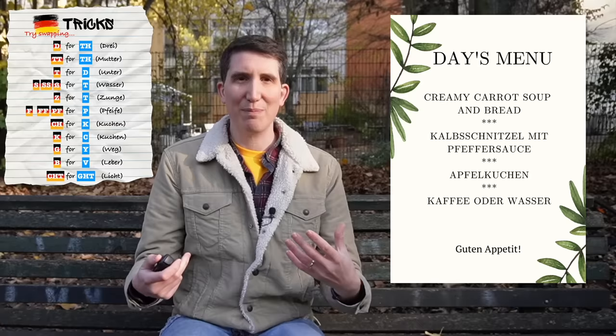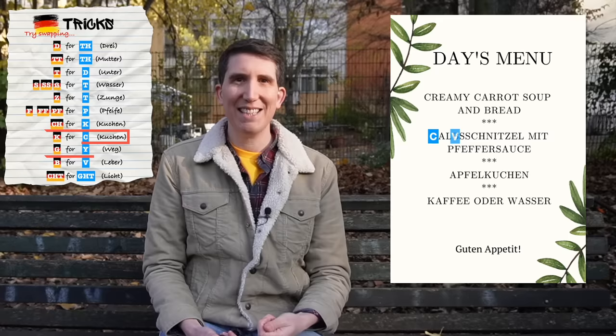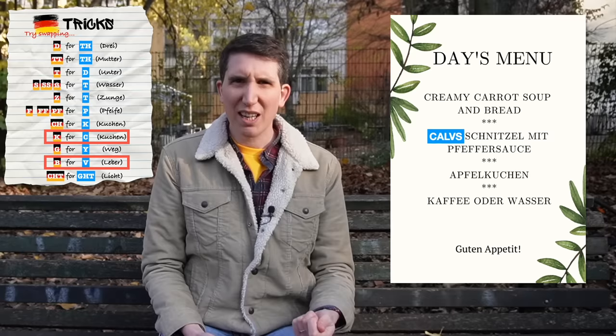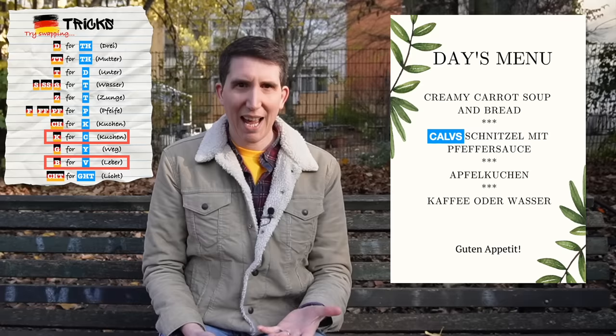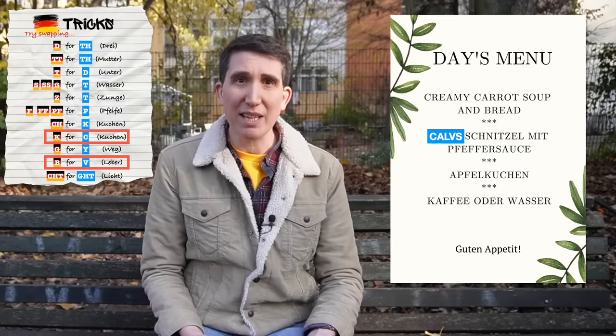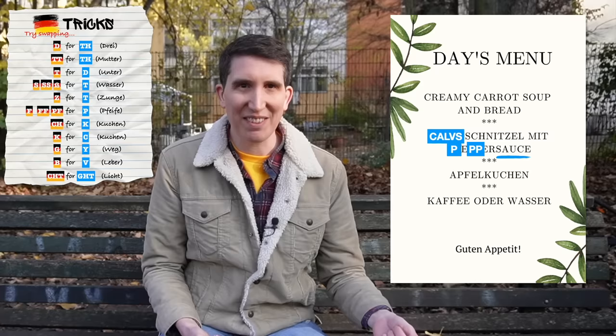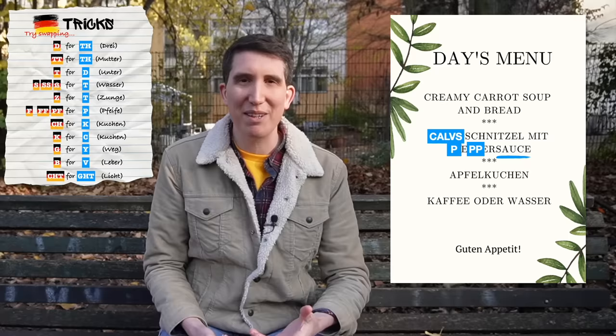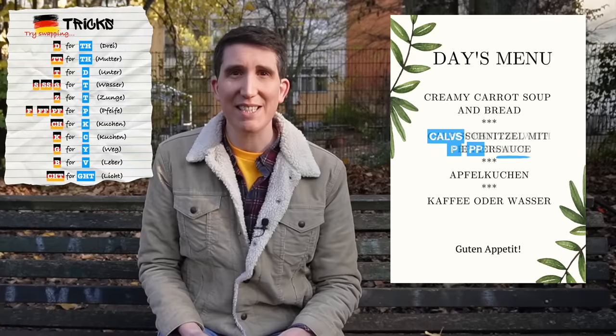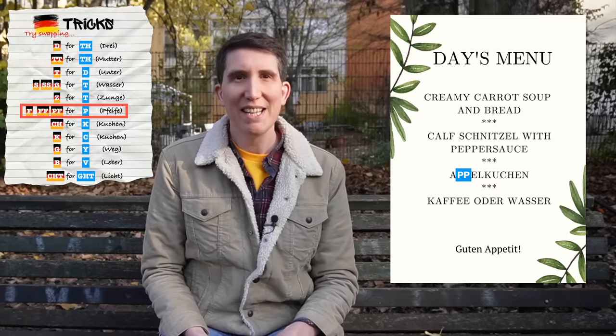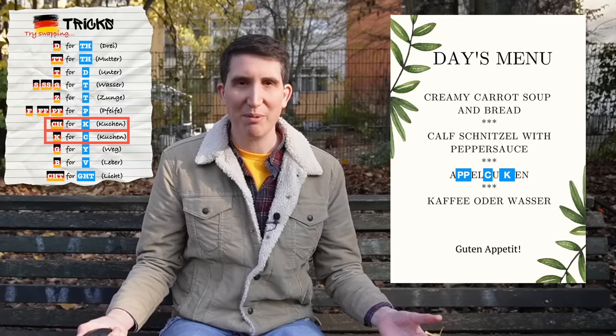The next word is a bit tricky. You probably already know what a schnitzel is — a delicious breaded cutlet. But what about the start of the word? Swap the K with a C and the B with a V and you get 'Kalbs' — does that look like any English word to you? How about 'calves'? 'Kalb' is the German for veal, the meat of a young cow — a calf. 'Mit' is just German for 'with', and we came across 'Pfeffer' earlier — it's our double whammy P swap, giving us 'pepper', and 'Sauce' is conveniently the English spelling. On to dessert: it's apple cake. The PF swapped for a P gives us 'apple', then swapping the K for a C and the CH for a K gets us close enough to 'cake' to work it out.